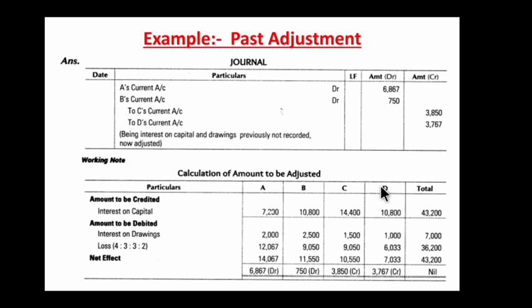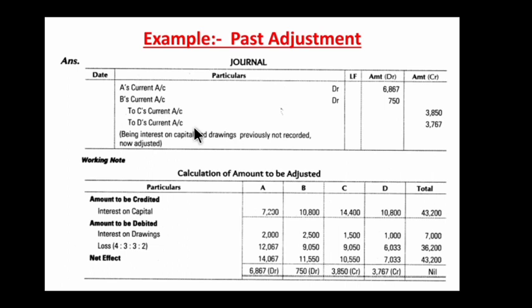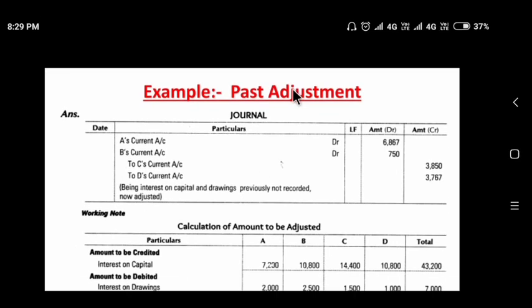In past adjustment, interest on capital is income for partners — so for A, B, C, D partners, interest amounts are credited to their accounts. Interest on drawings is an expense for partners and income for the firm. A small table is prepared to find the net effect. Based on the net effect, the adjustment entry is passed using the current accounts of A, B, C, D (since fixed capital method is being followed in this example).